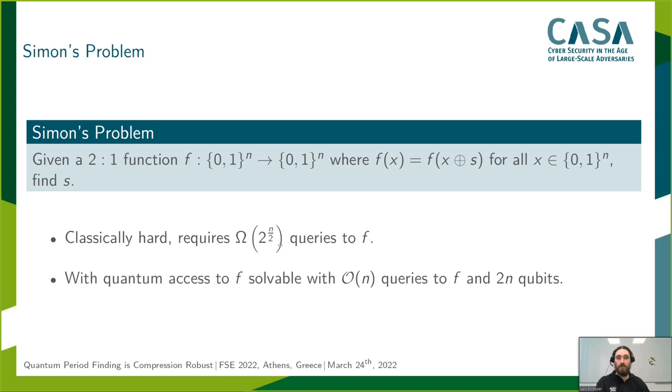Quantumly, on the other side, this problem can be solved efficiently, in polynomial time, with roughly n queries to f and 2n qubits. This can be done by using Simon's algorithm.